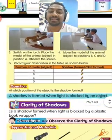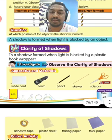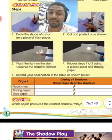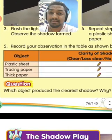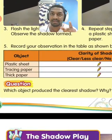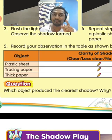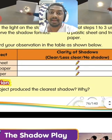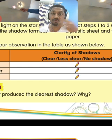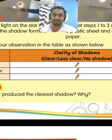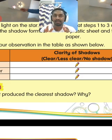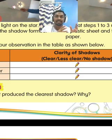The next part is clarity of shadows. What we are going to see is these three types of objects: transparent, translucent, and opaque object. We want to see how the type of object affects the clarity of shadows — does it produce a clear shadow, a less clear shadow, or no shadow at all?